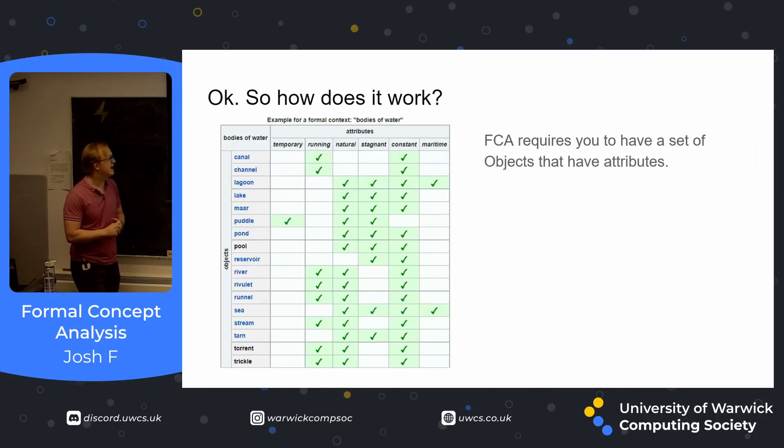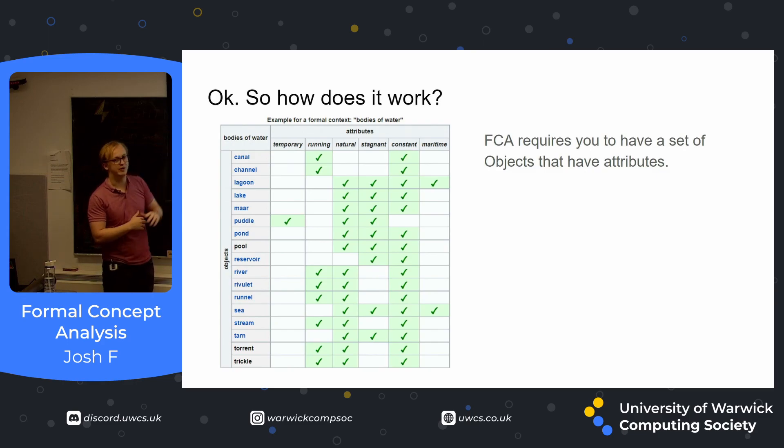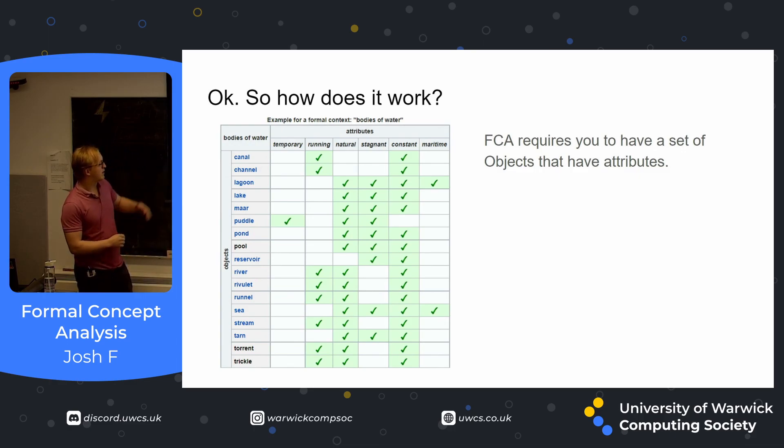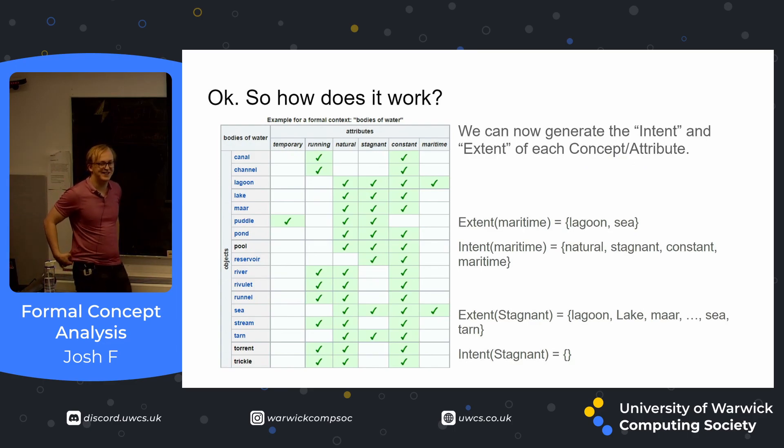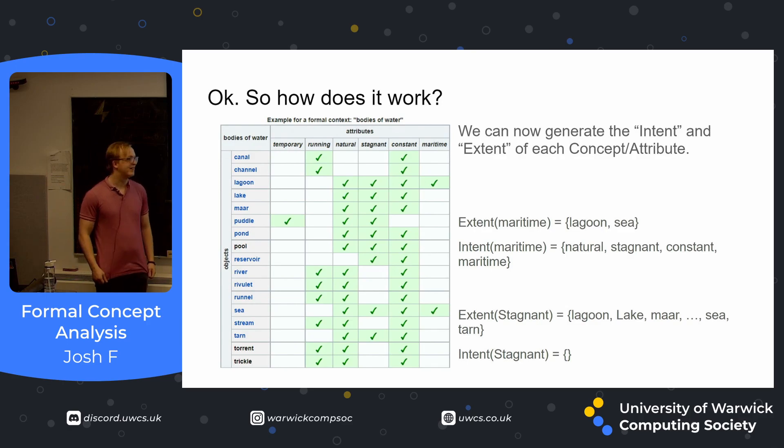How does it work? So here is a nice little matrix of our objects and our attributes. For example, a channel is running and it's constant, whatever constant means. And we can generate this matrix for our set of objects and our set of attributes by just true or false. And then we can figure out what their intent and extent is. What's intent and extent? Good question.